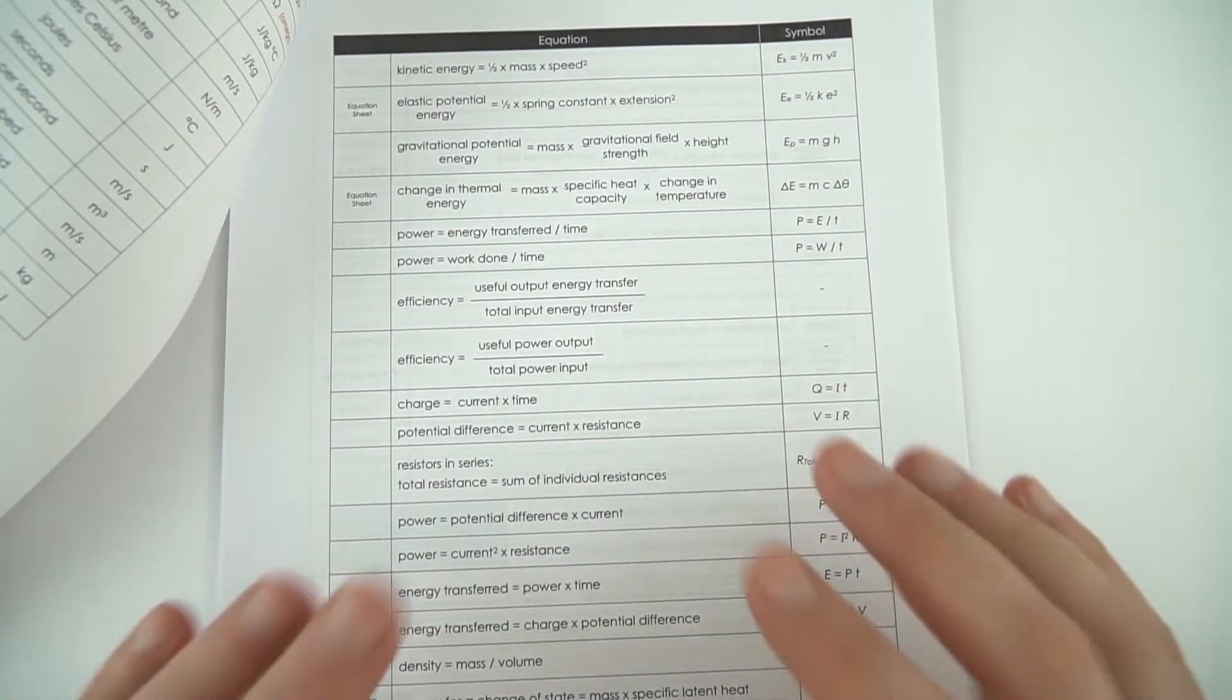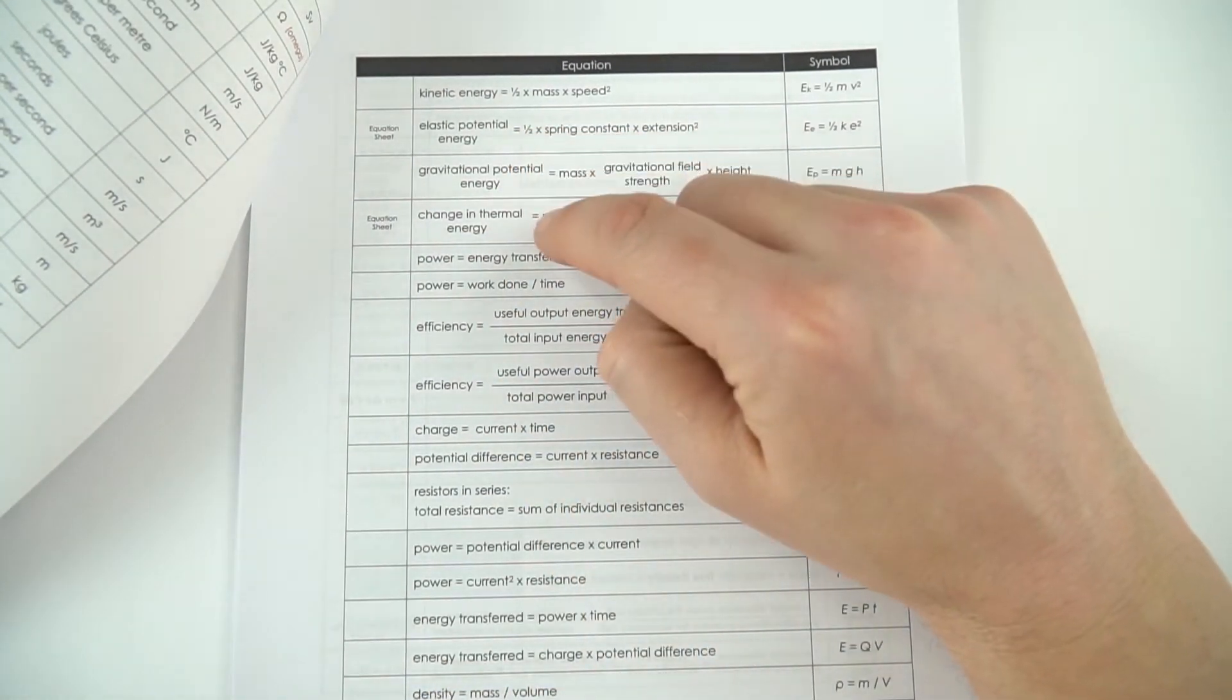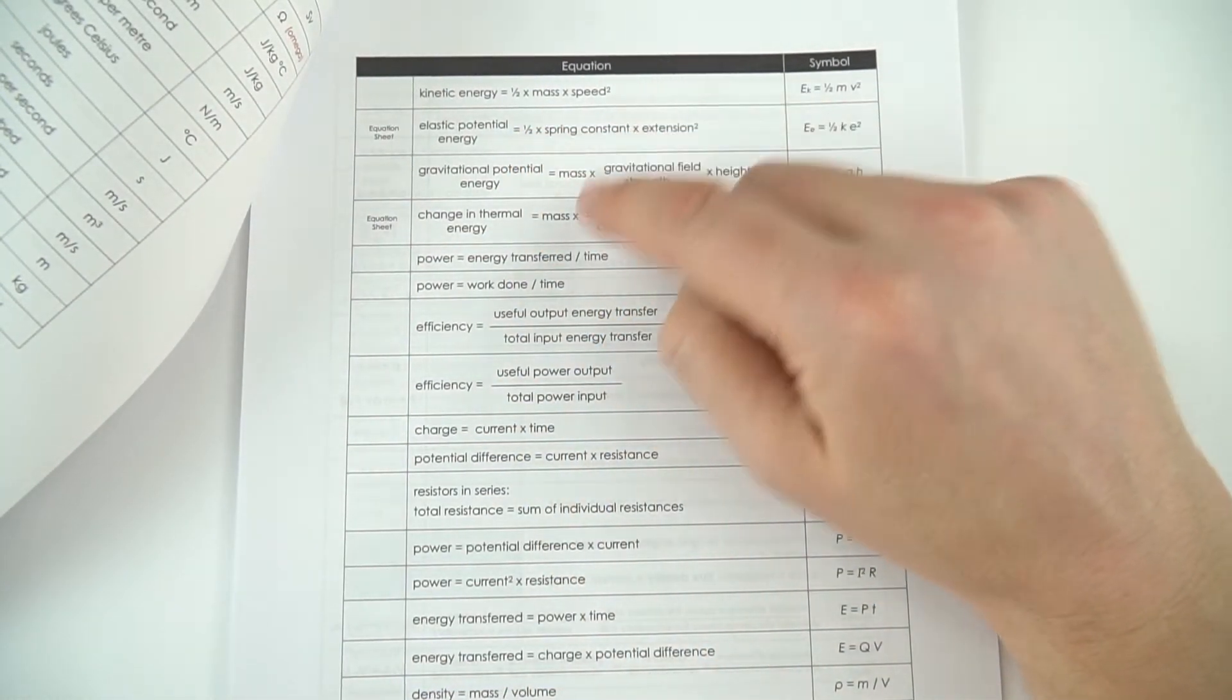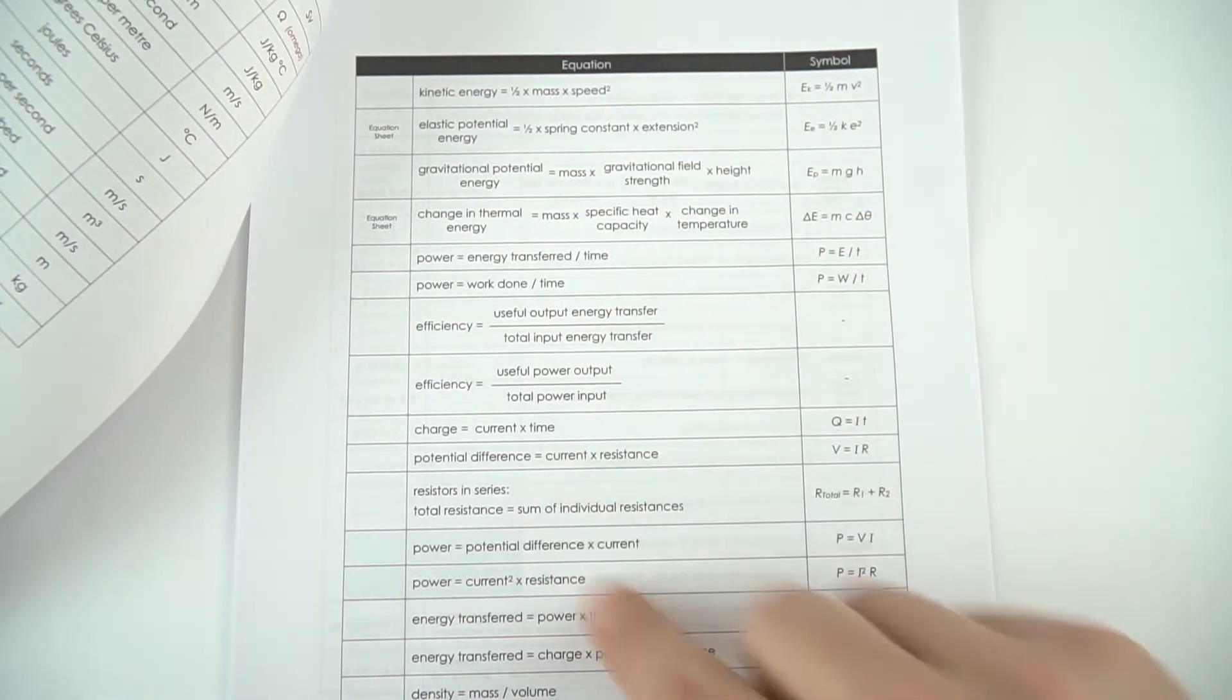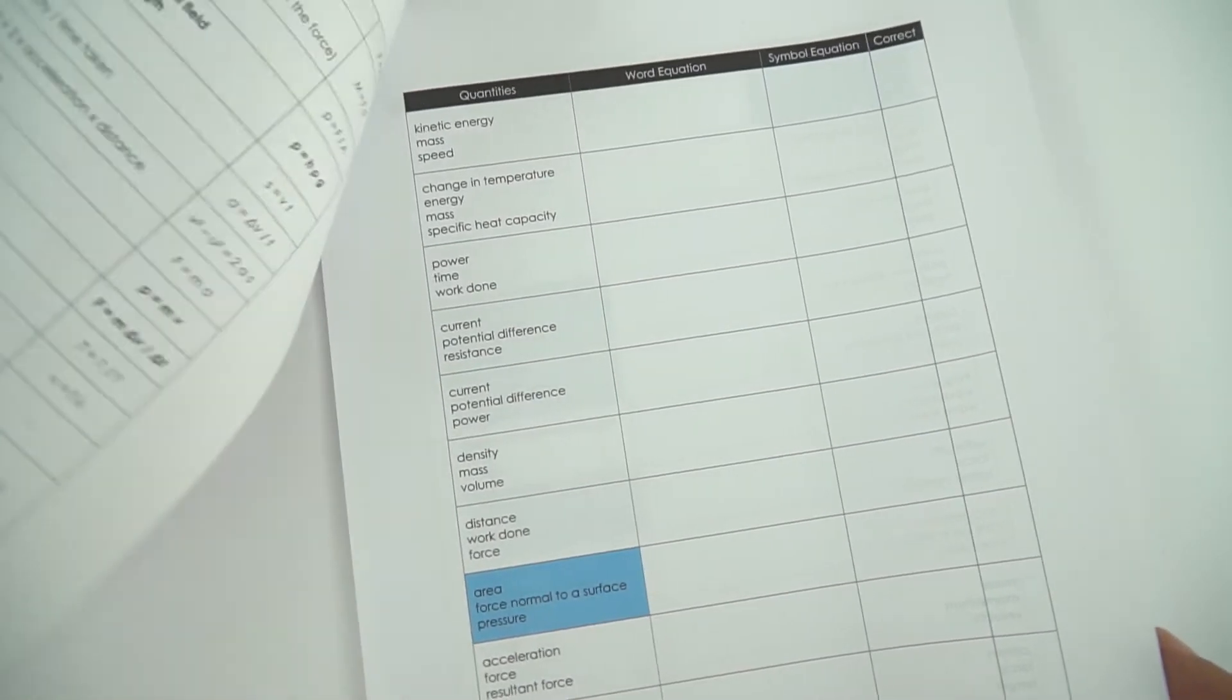It's true that in your final exams you'll be given an equation sheet, but it doesn't have many of these equations on it. Although some are given to you, the rest you've got to remember, and there's a lot you need to remember for different parts of physics.